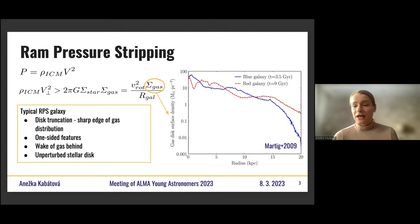So this results in this outside-in scenario in the gas stripping, because on the edges, that's where it's more loose, and it proceeds to the center. So the typical stripping galaxy has this disc truncation, sharp edge of the gas, which is exactly the point where the stripping is still effective. And also it has one-sided, very prominent wake of gas.